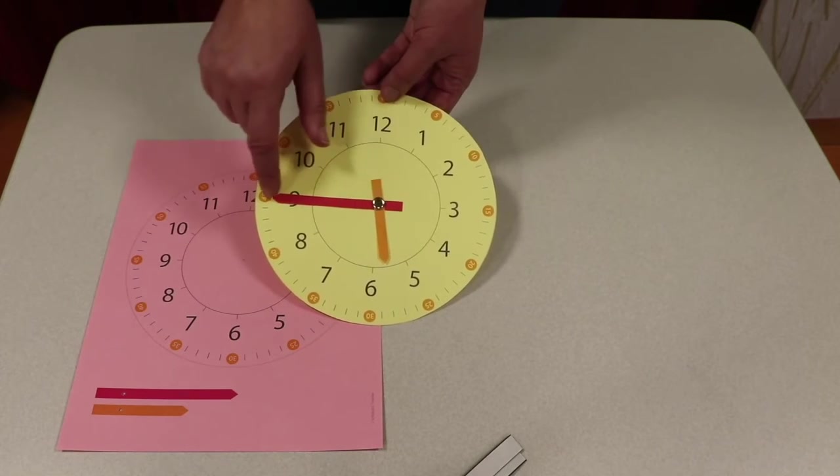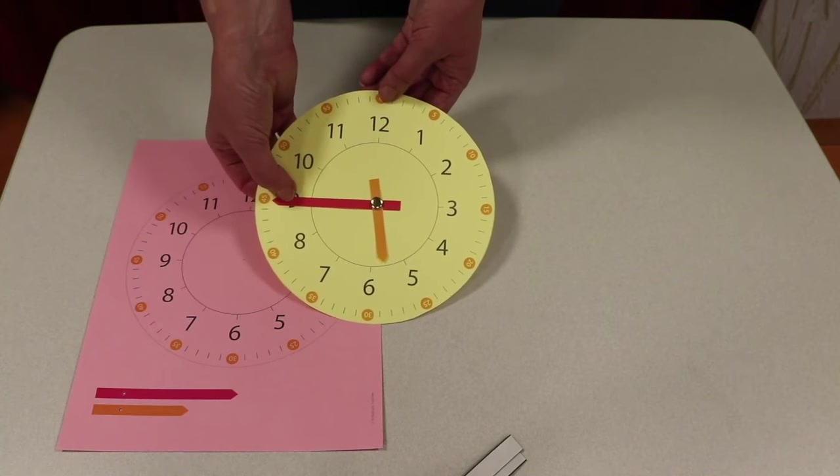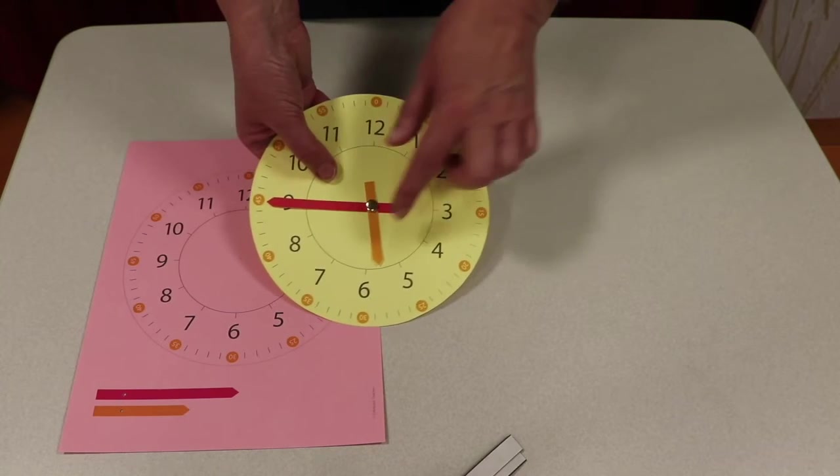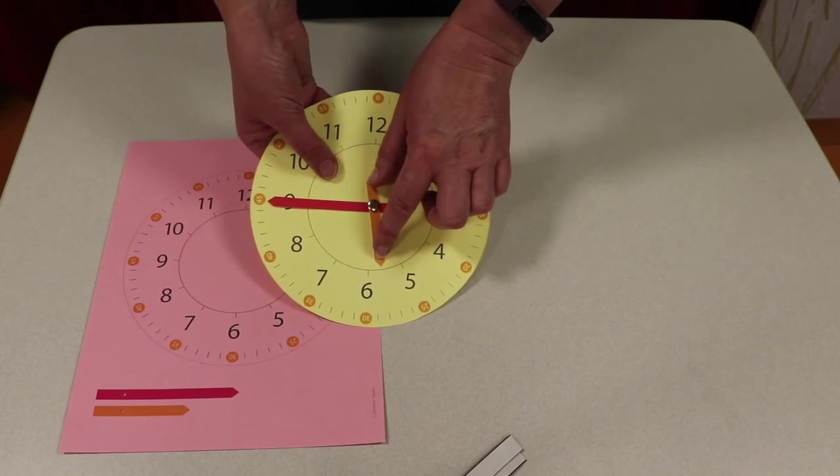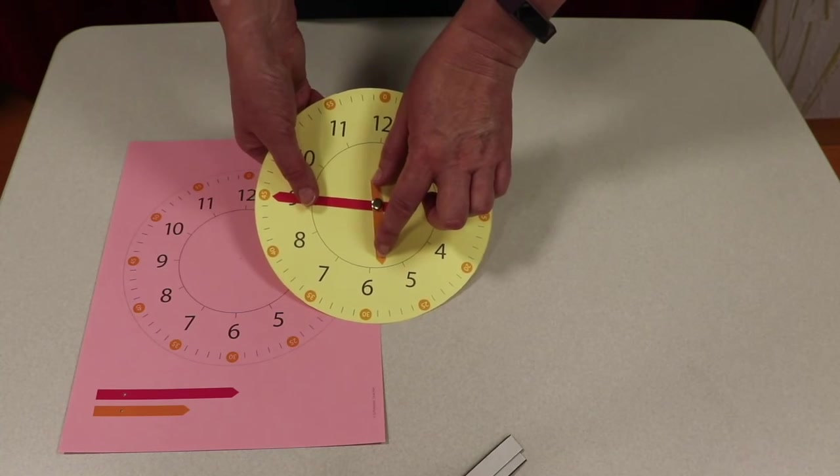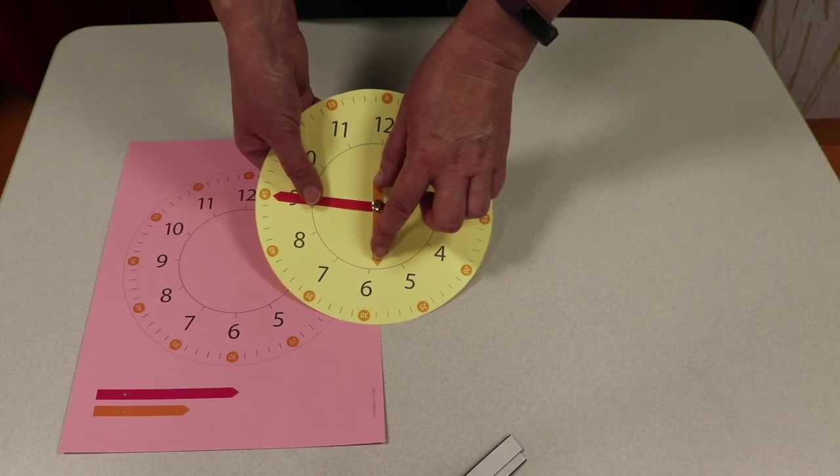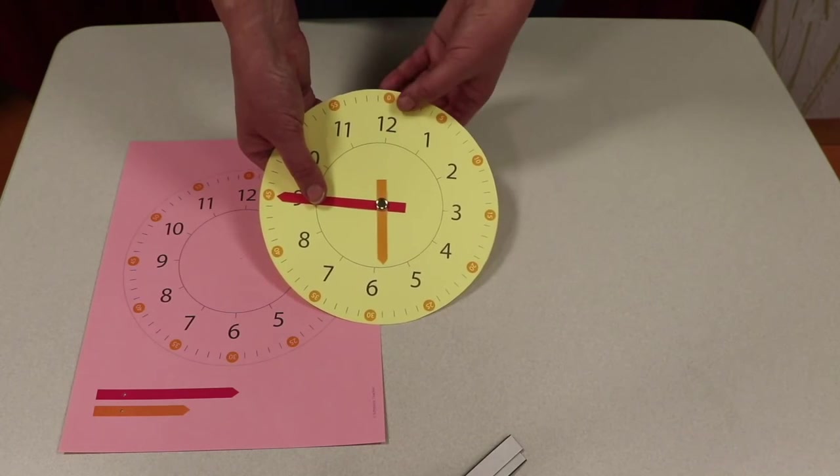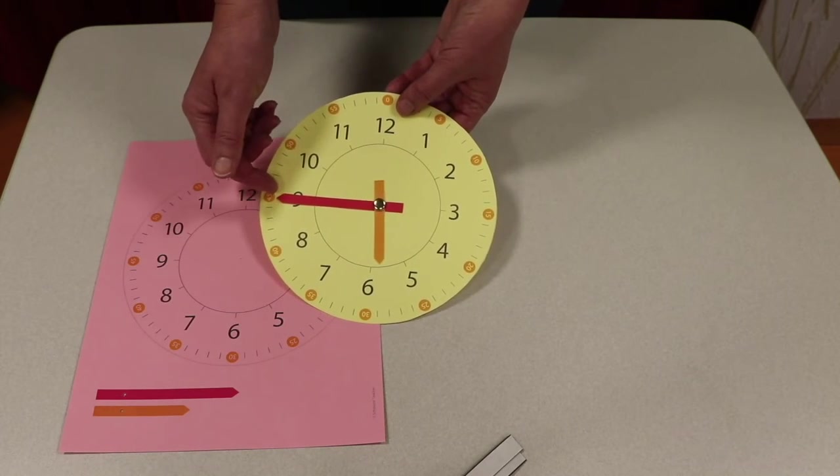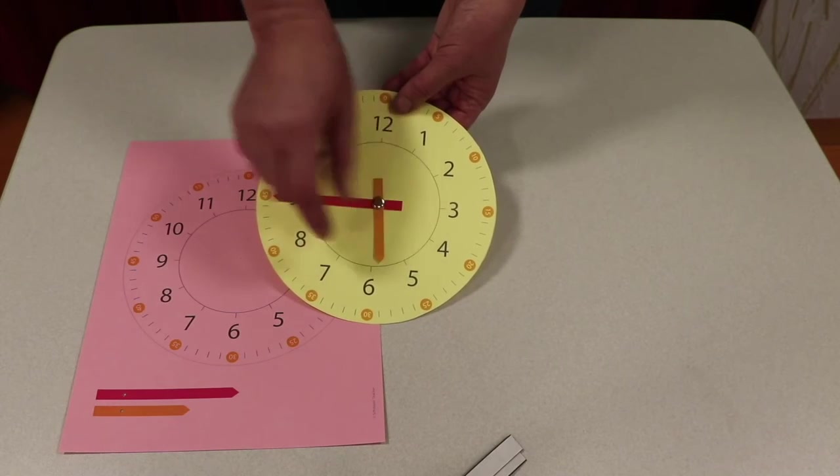So you can see if you have dinner at 5:45, the long hand needs to be on 45 and your short hand, which is your hour, that tells your hours, goes a little bit almost to 6 o'clock. Because by this point in time, at 45 minutes after the hour, your short hand will almost be at 6.